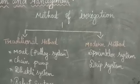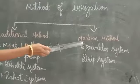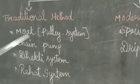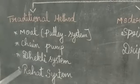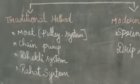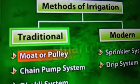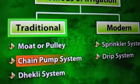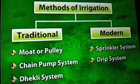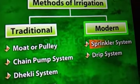There are two different methods of irrigation: traditional method and modern method. Traditional method is classified into four types: mote or pulley system, chain pump system, dhekli system, and rahat system. Modern system of irrigation is classified into two types: sprinkler system and drip system.